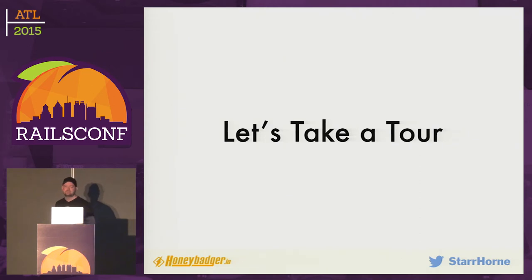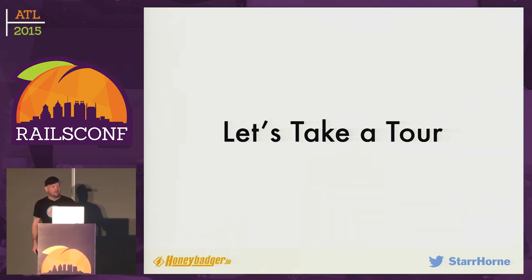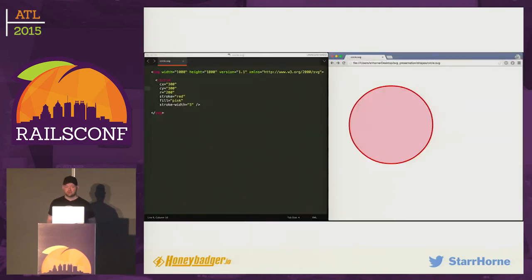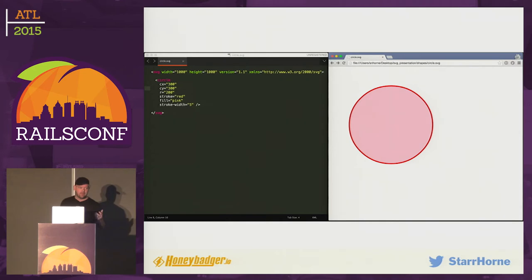Let's take a quick tour of SVG. In HTML, SVG is not that different from HTML. In HTML you have paragraph tags, heading tags — tags that describe how a document is marked up. In SVG, you have tags that describe shapes and other graphics primitives. To draw a circle, you use the circle tag. Since this is XML, you pass in your attributes — like the radius and the center point — as XML attributes. You can also give it a stroke and a fill.